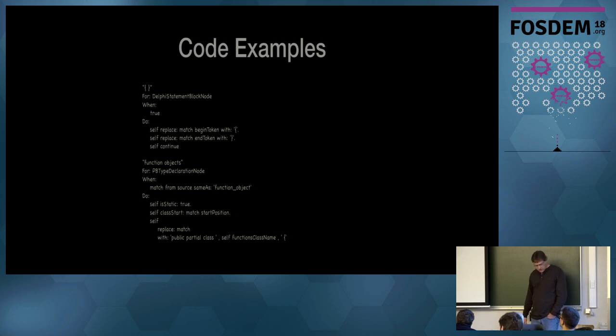The second one's from some PowerBuilder migration, where we migrated to C-sharp, and they have these function objects, and in the function object, we need to check whether, we check the type node, but the type nodes can be any type of PowerBuilder type, so we also need to check whether it equals function object. So, and whenever we do that, we set a couple of properties, then we just replace the whole match with a partial, beginning of a partial class.